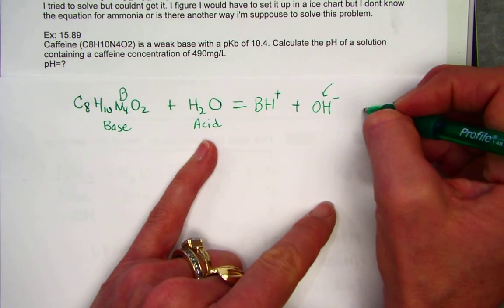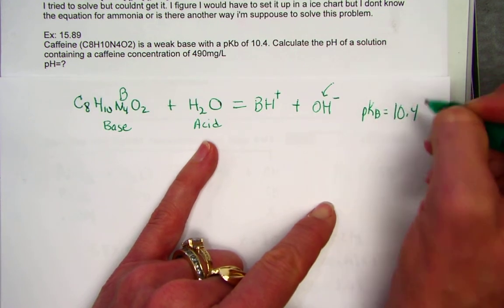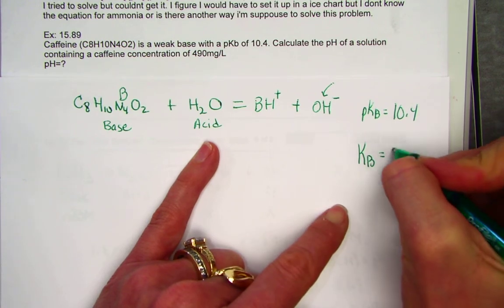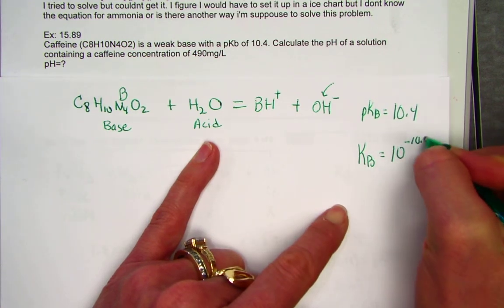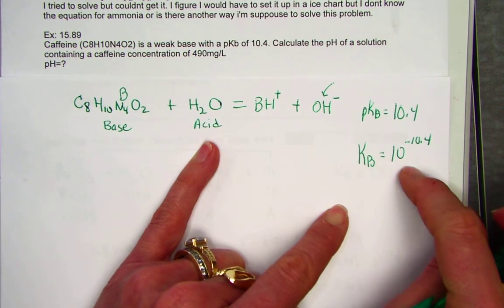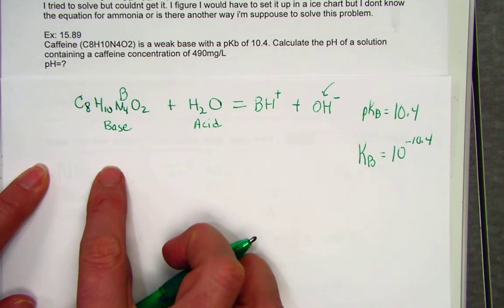They give us something called the pKB for caffeine is 10.4. KB then would simply be 10 raised to the negative 10.4. So taking the negative log of KB, I can get that relationship there.